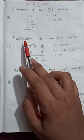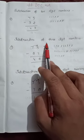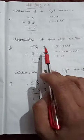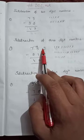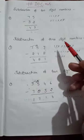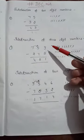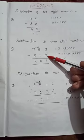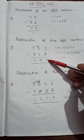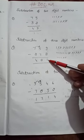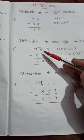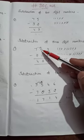Now we will do the second — subtraction of three digit numbers: 759 minus 278. First, 9 minus 8. Very simple. You all know that what we get is 1.